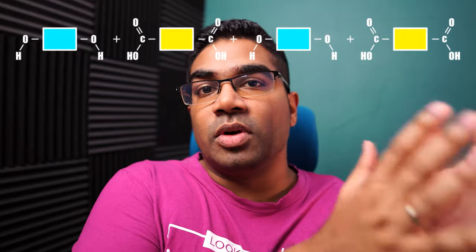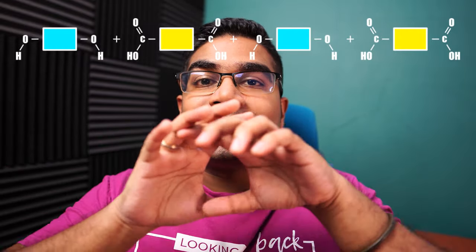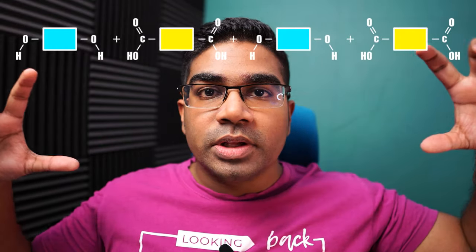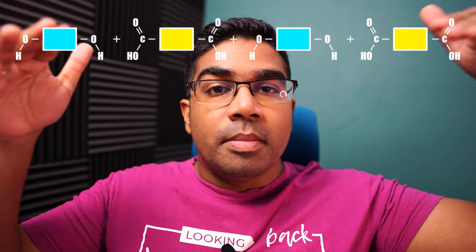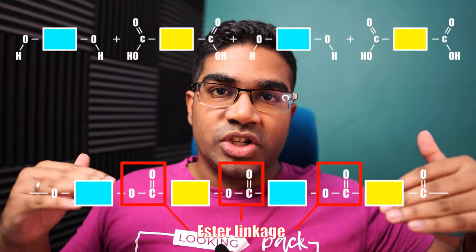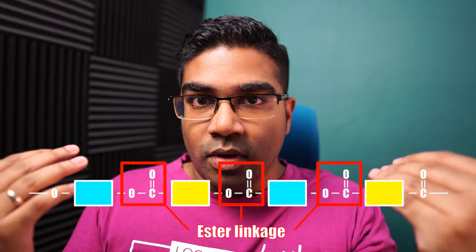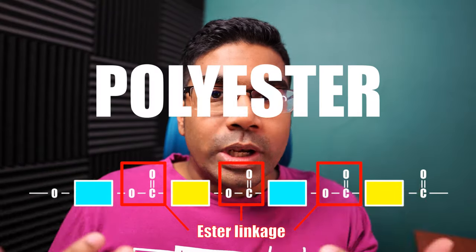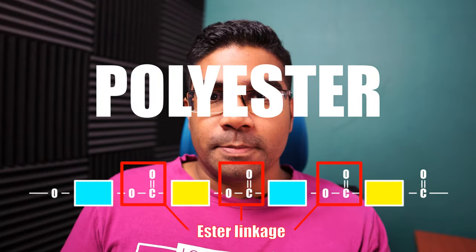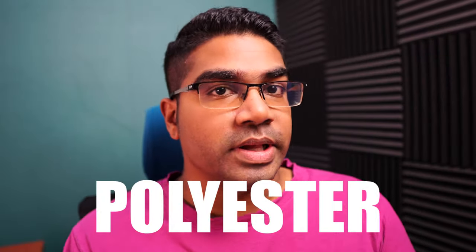When we have many of these molecules — thousands of molecules — combining together, we form many ester linkages. Therefore, these are known as polyesters. Terylene is a polyester.